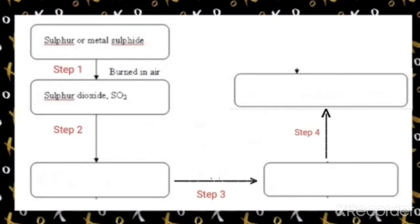The first step is the preparation of sulfur dioxide by burning sulfur in air in excess to give rise to sulfur dioxide: S + O₂ → SO₂. Instead of sulfur, we can also use metal sulfides burned in air to prepare sulfur dioxide.